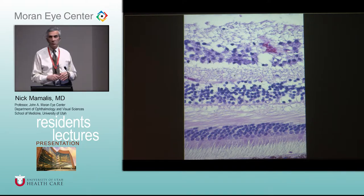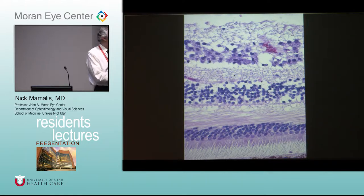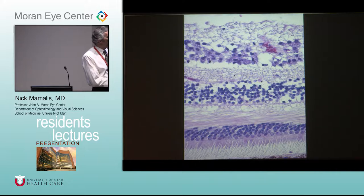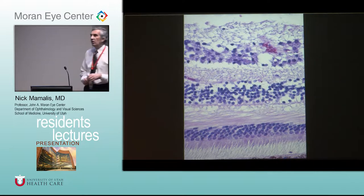We're in the macula. If you look at the ganglion cell layer you see there are multiple ganglion cell layers here. Also note: the fibers from the outer plexiform layer and from the outer nuclear layer are running horizontally instead of vertically. What layer do we call that?